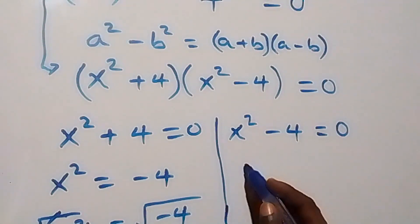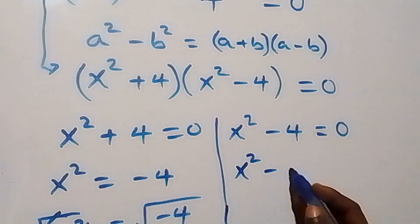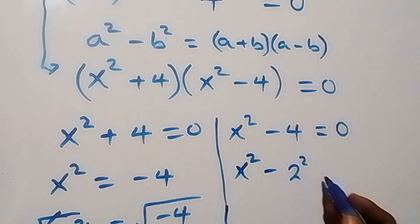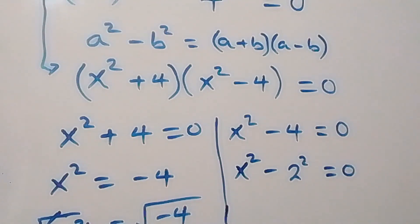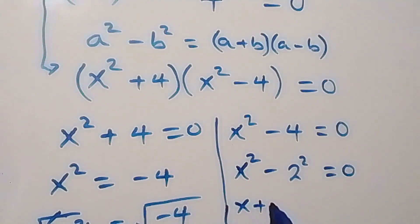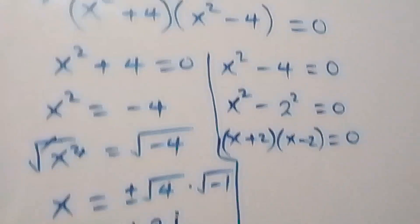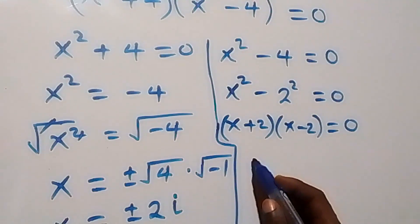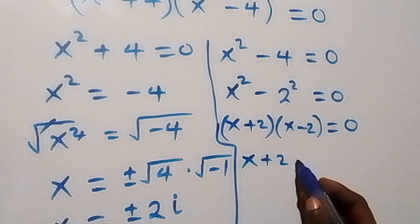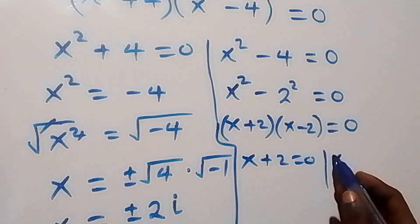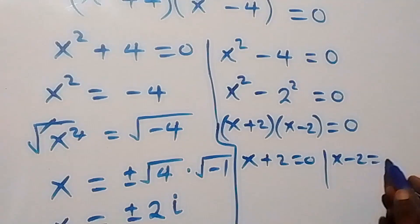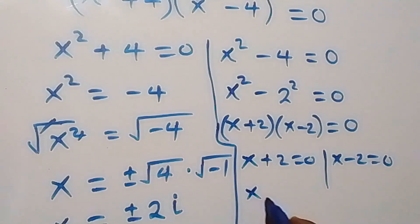From the other case, we can write x squared minus 4 as x squared minus 2 squared equals 0. Following the difference of squares, this factors as x plus 2 times x minus 2 equals 0, which implies x plus 2 equals 0 or x minus 2 equals 0, giving x equals minus 2 or x equals 2.